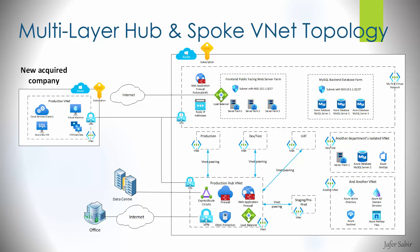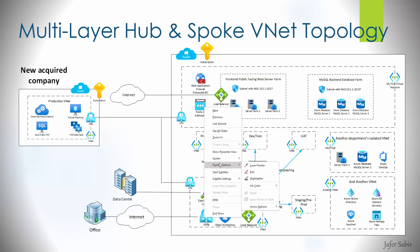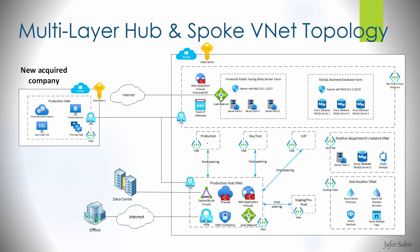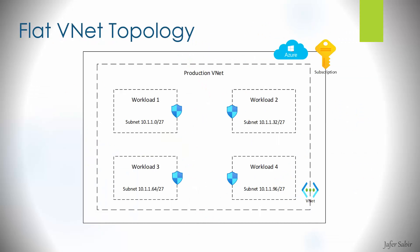The first topology example is a multi-layer hub-and-spoke VNet topology. In this model, spokes can become hubs themselves for other spokes, creating a two-level hierarchy. For example, the production spoke can act as a second-layer hub with its own spokes off it, its own internet connection, and the same security and infrastructure services deployed at that level, just like the primary hub.